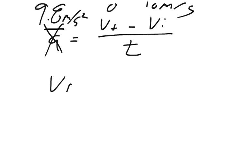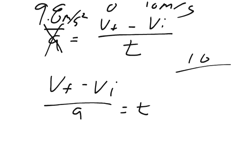We take the final velocity minus the initial velocity and divide it by acceleration equals time. So we have 10 meters per second divided by 9.8 meters per second squared, and that gives us the time till it reaches the highest point.